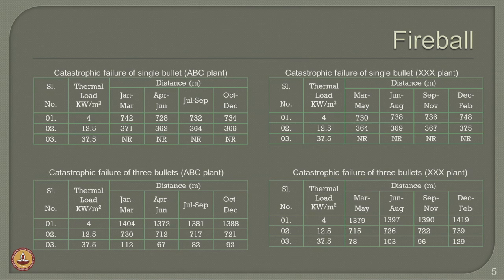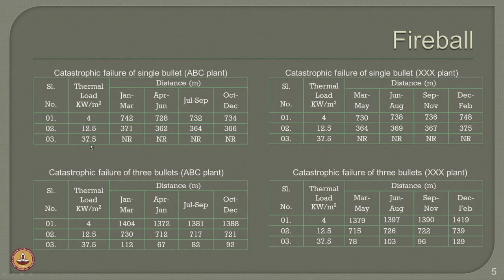The left-hand side shows the consequences of fireball on the ABC plant and the right-hand side table shows the consequences on the XXX plant — catastrophic failure of a single bullet and catastrophic failure of three bullets. For a given thermal radiation intensity varying from 4 to 37.5 kilowatt per square meter, the hazard distances in terms of fireball are evaluated for different cases, different locations, different kinds of failure — single failure or three cascading failures of bullets.